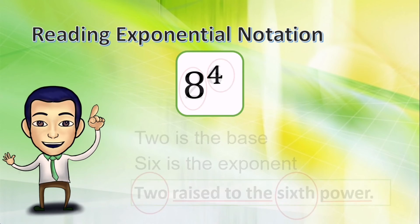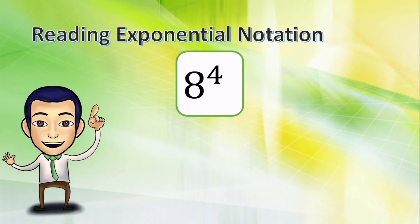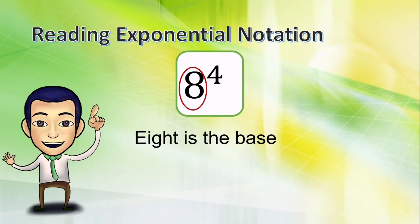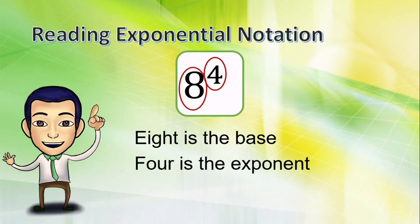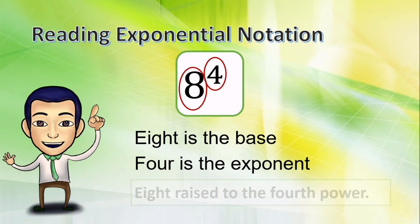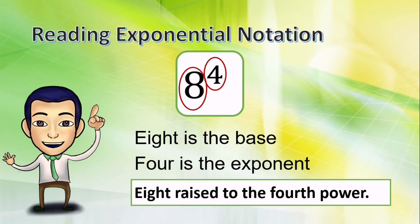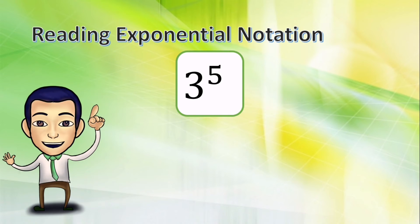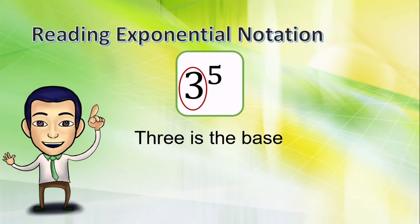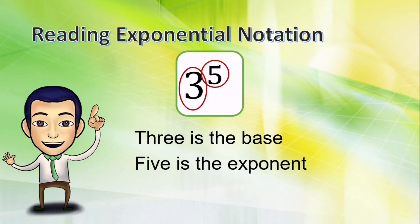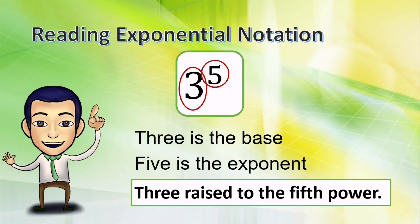Very good. In this second example, eight is the base and four is the exponent, so we can read this as eight raised to the fourth power. Again, how will we read this one? Very good. How about this? Three is the base, five is the exponent. How will we read this one? Correct — three raised to the fifth power.